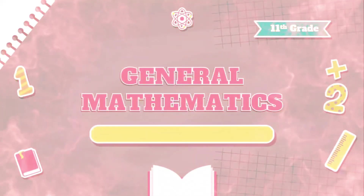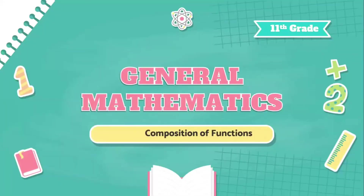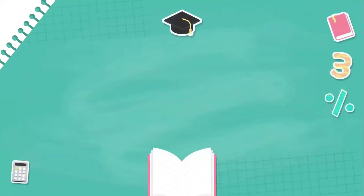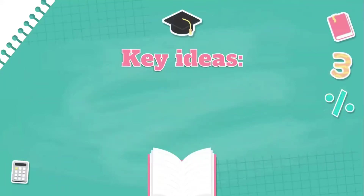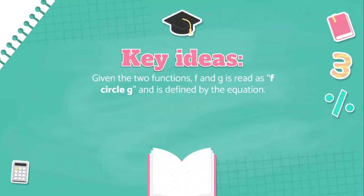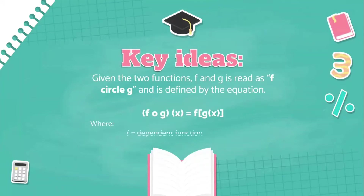Hello everyone, today I will be discussing composition of functions. The key idea of composition of functions is that given two functions, f and g, it is read as f circle g and is defined by the equation f circle g of x equals f of g of x, wherein f is the dependent function and g is the independent function.